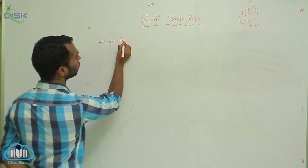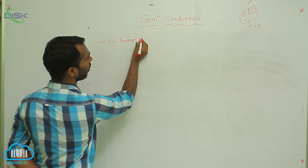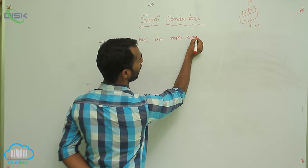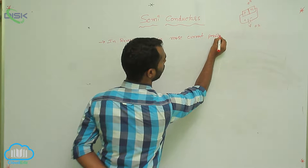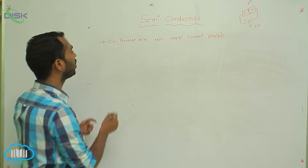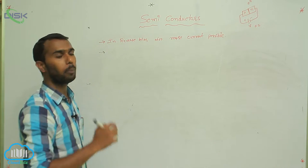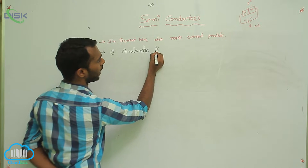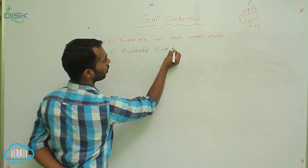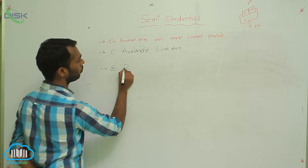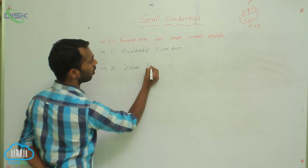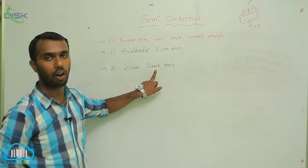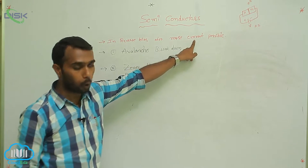In reverse bias also, more current is possible. Because of what? Because of breakdown. How many breakdowns do we have? Two breakdowns: one is avalanche breakdown and the next one is Zener breakdown. These two concepts explain how current is more in reverse bias.